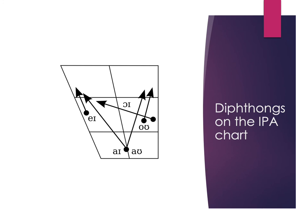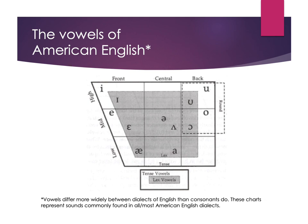When diphthongs are placed on the vowel chart, they're shown as just a starting point and an arrow, because they're more about the direction the sound is moving toward. Every time we pronounce vowels they're made slightly differently depending on surrounding sounds or speech rate — you may fully reach that second sound or you may not. But the point is that you're moving toward that second symbol, which is why we use these conventions regardless of the exact sound produced.